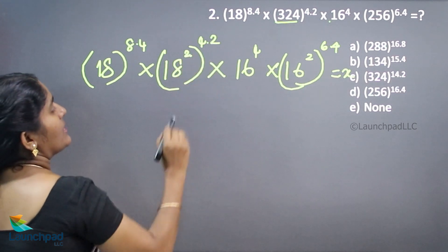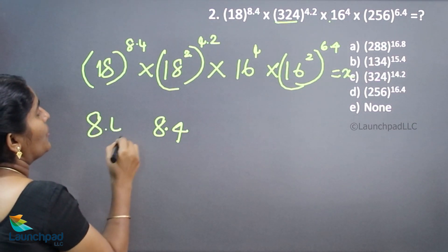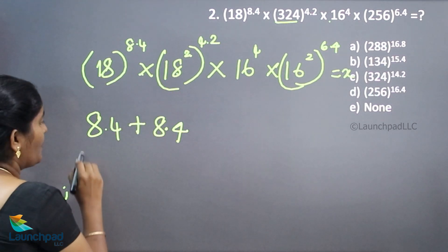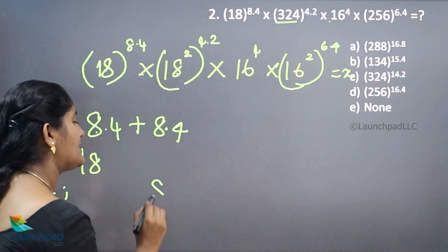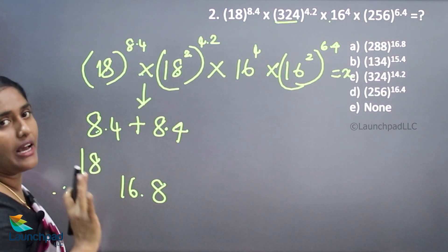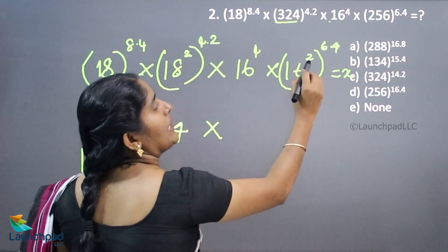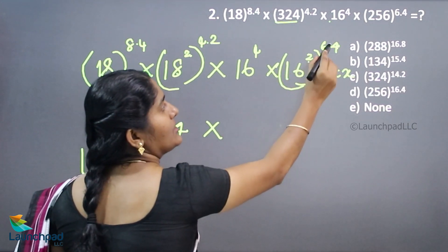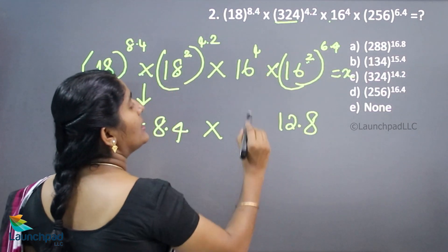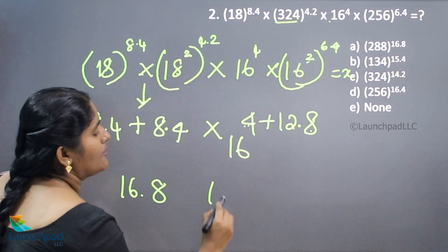So 2 twos are 4, 4 twos are 8. Here 8.4 plus, because addition operation is there — 18 into 18 — so we want to add both power values: 4 plus 4 is 8, 8.4 plus 8 is 16. This operation is over for the 18 power value. Now moving to the 16 power: A power M the whole power N means we multiply — 2 into 4 is 8, and then 2 into 6.4 is 12.8. Adding both power values gives 16.8.